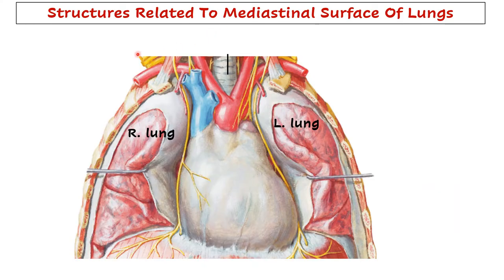Let us see which structures will be related to the mediastinal surface of lungs. The mediastinal surface means the structures which will be present in the mediastinum - that is, all those structures which are present between the two lungs and the pleural cavity. You can see here all these structures; they constitute the mediastinum. So they will come in relation to the mediastinal surfaces of right and left lung.